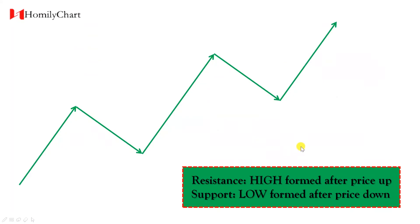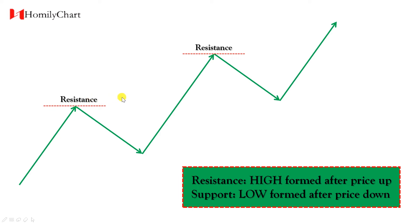There are two factors that influence the formation of resistance and support. Let's learn the first factor: the highs and the lows. The highs formed after price goes up are called resistance. The lows formed after price goes down are called support.